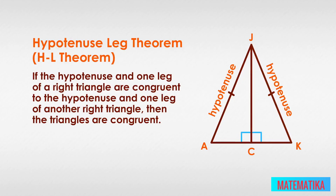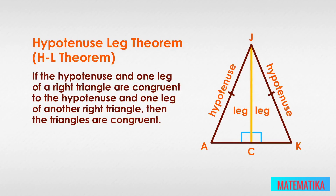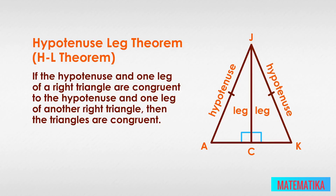We know by the reflexive property that side JC of triangle JAC is congruent to JC of triangle JKC. And we know that the two hypotenuses, which began our proof as equal-length legs of an isosceles triangle, are congruent. So now we have one leg and a hypotenuse of triangle JAC congruent to the corresponding leg and hypotenuse of triangle JKC.